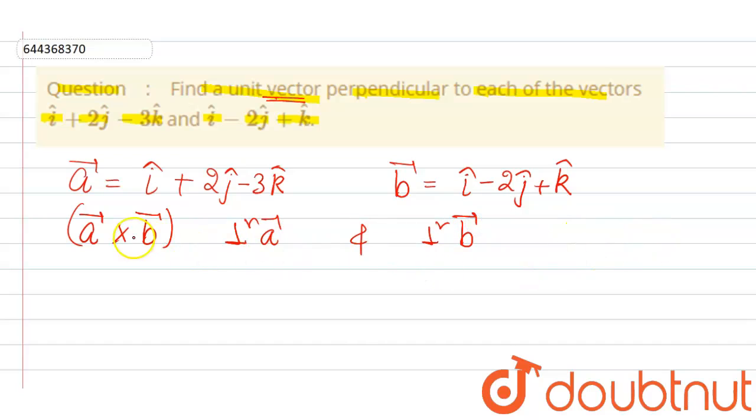So we have to find the unit vector in the direction of a cross b. So first we find a cross b and assume it to be c vector.